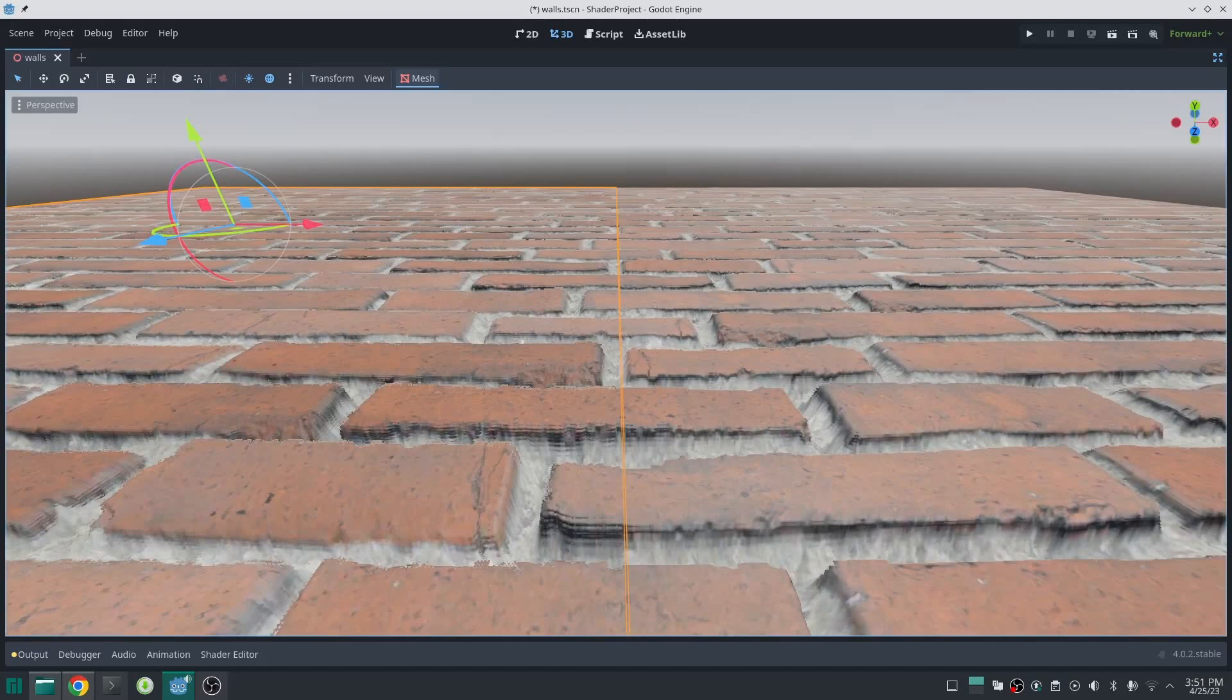This wall has 2K texture and the wall on the right hand side is 512 by 512. You can tell the difference.